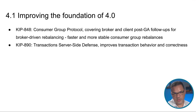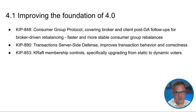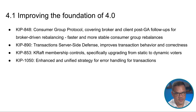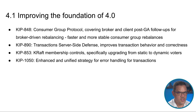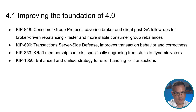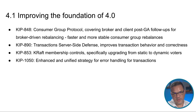These latest changes build on the work from Phase 1 in Kafka 3.x and Phase 2 from Kafka 4.0. KIP 853 introduces dynamic voters to KRaft membership controls. KIP 1050 brings a unified strategy for error handling for transactions, categorizing exceptions into four types: producer retriable, producer recoverable, application recoverable, and invalid configuration. The main goals are to simplify your error handling and provide clarity in client code around error messaging.